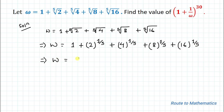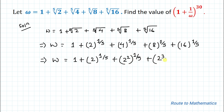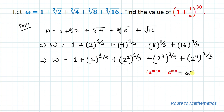In the next step, we make all the bases the same, that is base 2. So we write: 2 to the power of 2, whole to the power of 1/5, plus 2 to the power of 3, whole to the power of 1/5, plus 2 to the power of 4, whole to the power of 1/5. In the next step we apply the exponential law: a to the power of m, whole to the power of n, equals a to the power of mn. Since the powers are simply multiplied, changing the order doesn't affect the value.